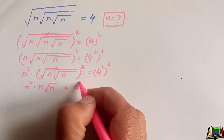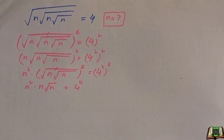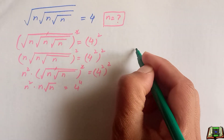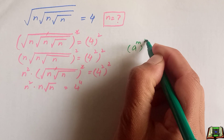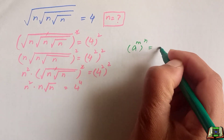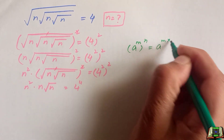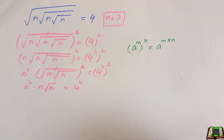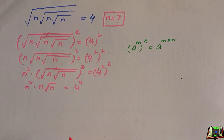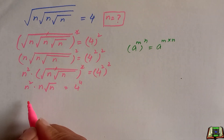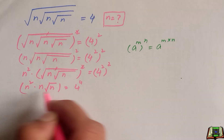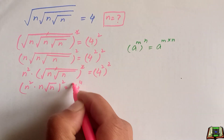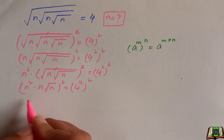We use the power of a power rule here, which says if a raised to power m is raised to power n, we can multiply the powers m times n. So we simply multiply the powers here.